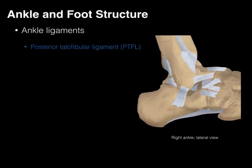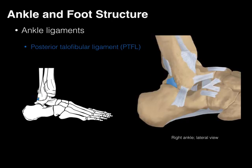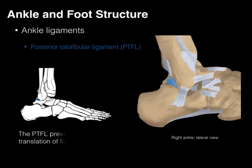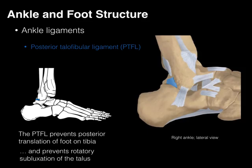The posterior talofibular ligament attaches from the talus to the fibula, and it's on the back, hence posterior. The PTFL does the opposite of the ATFL: it prevents posterior translation of the foot on the tibia. In addition, it prevents rotatory subluxation of the talus. The PTFL is the strongest of all the ankle ligaments.